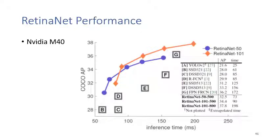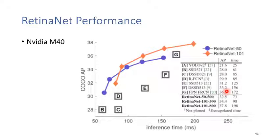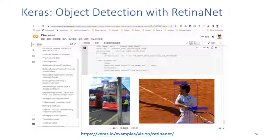RetinaNet is more accurate than YOLO v2 and other models. We can adjust parameters for a faster version or a more accurate version. The more accurate version can beat FPN-based Faster RCNN. The faster version is much faster than RCNN, but still slower than YOLO. Keras has an example of RetinaNet — if you are interested in implementation details, refer to that link.